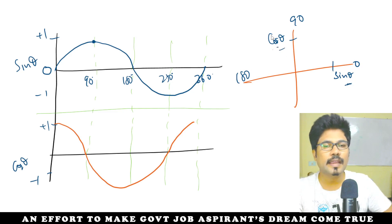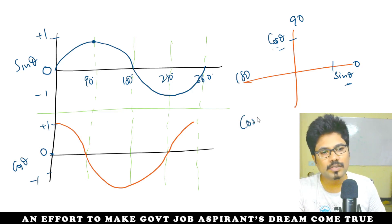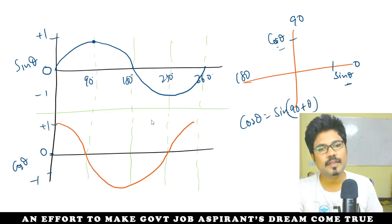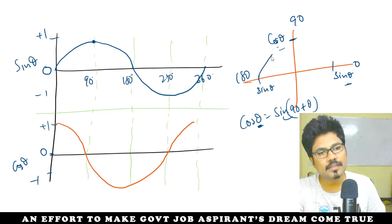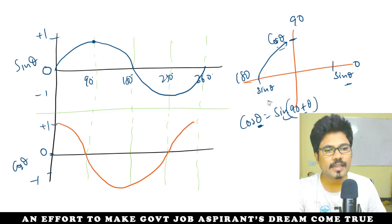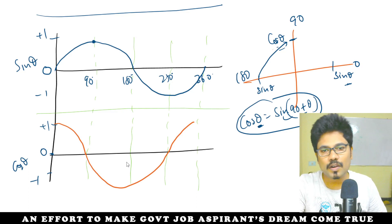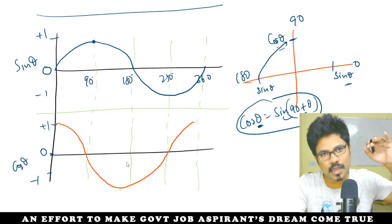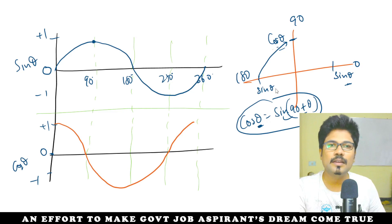Sin 0, cos 90 degrees. Sin 90 degrees is cos 0. So sin 90 plus theta gives us the cos function. Cos theta is equal to sin(90 plus theta). Sin is equal to sin(90 plus theta). This means sin and cos are 90 degrees out of phase. Cos theta is equal to sin(90 plus or minus theta).